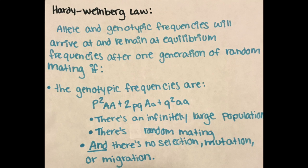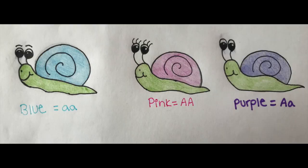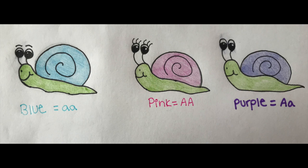And all of these things must be met for it to be Hardy-Weinberg. Snails from Snail-topia and Snail Island can have three different colors. Blue is homozygous recessive, pink is homozygous dominant, and purple is heterozygous.